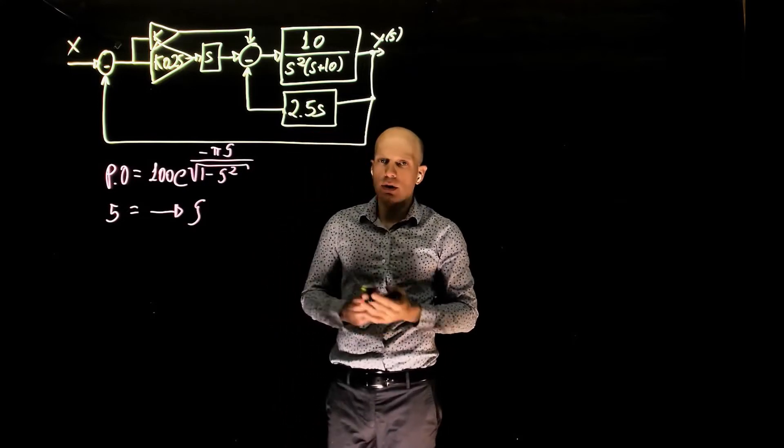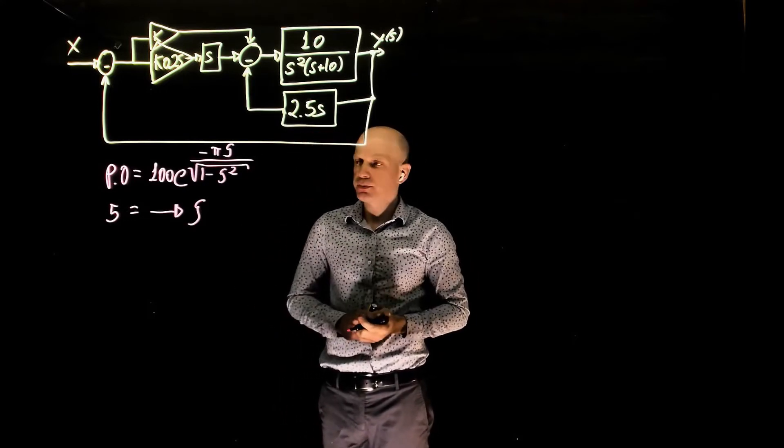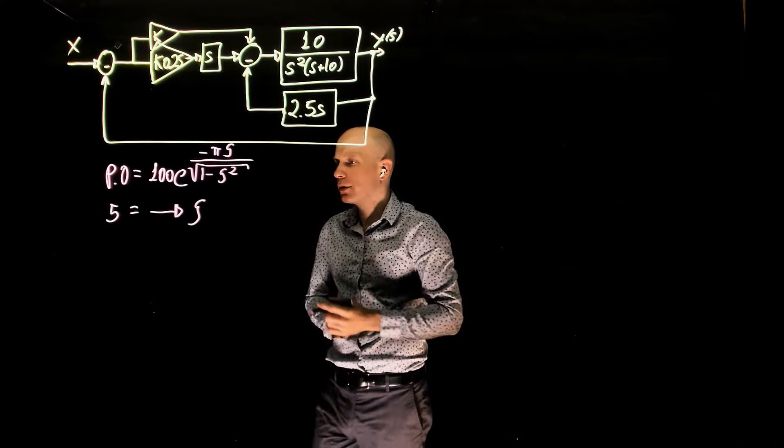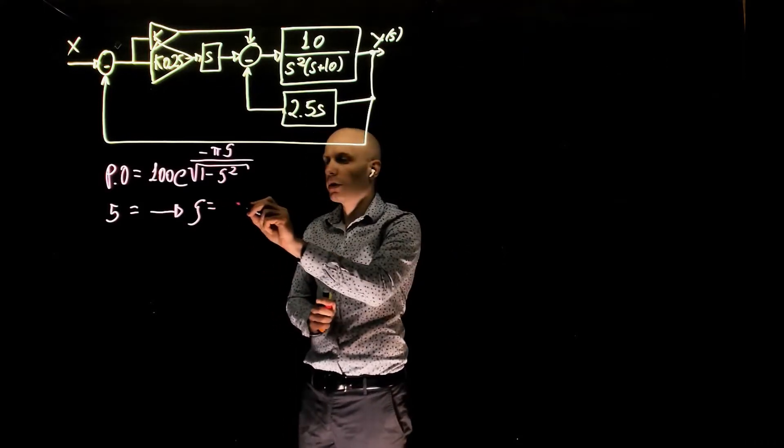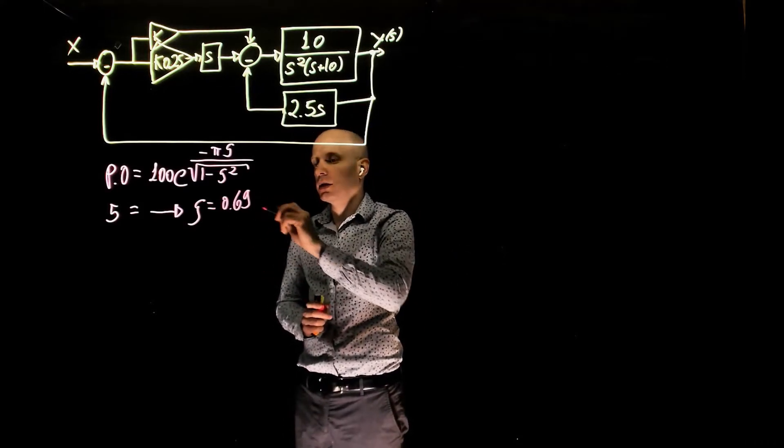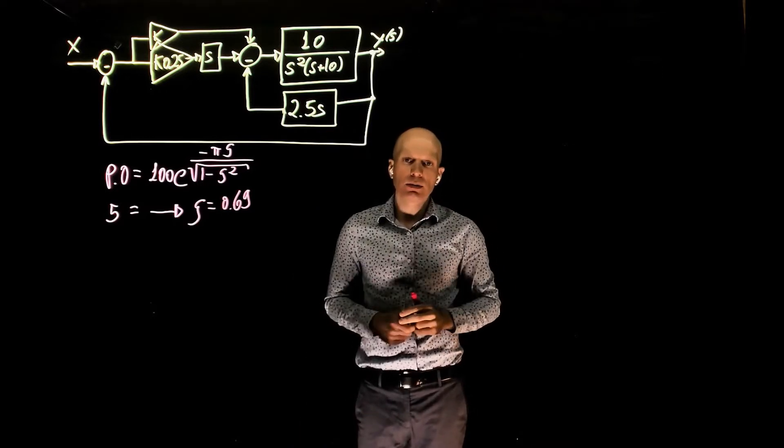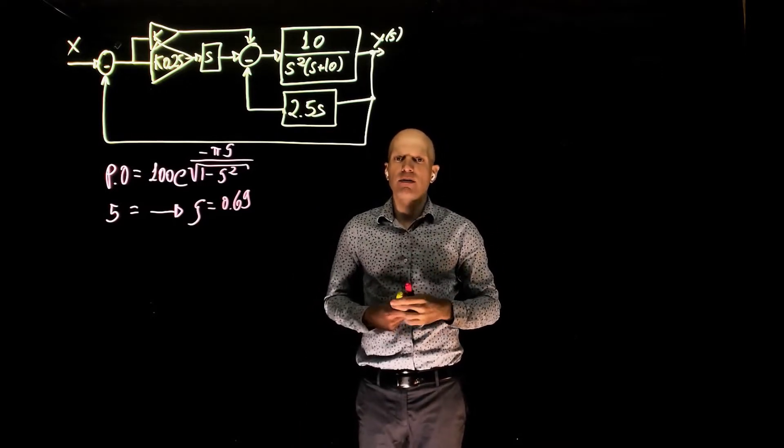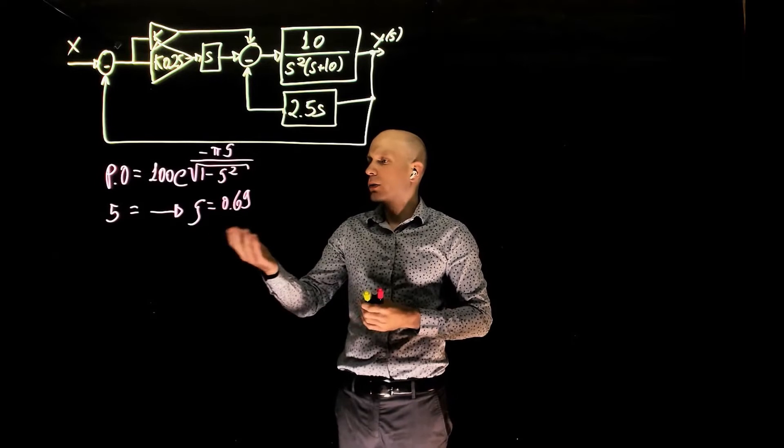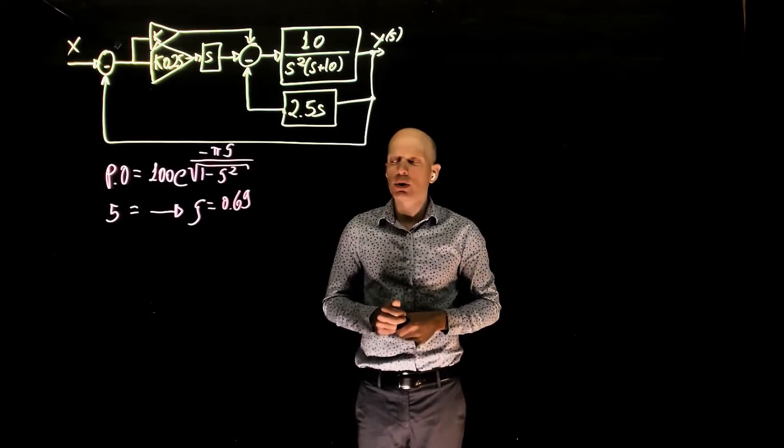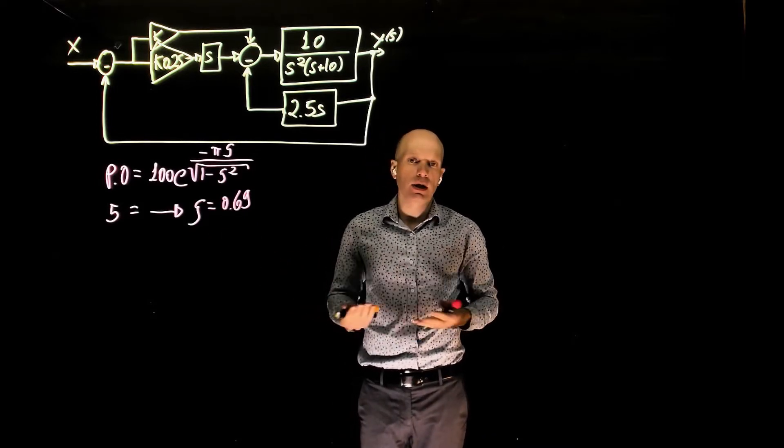I think at this point I can skip these calculations, this is very simple math, and just give the value of zeta that we are looking for, that is 0.69. So by saying that we want the system to have a percent overshoot of less than 5%, we are saying that we want the damping ratio to be equal or greater than 0.69, that is the same statement.